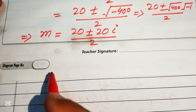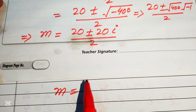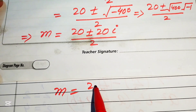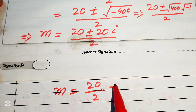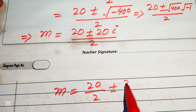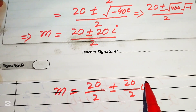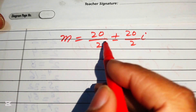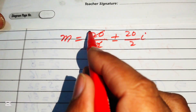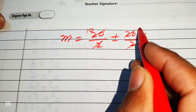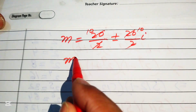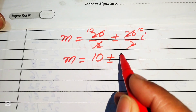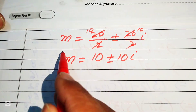Splitting the fraction: 20 over 2 plus or minus 20i over 2 gives us the two values of m: m equals 10 plus 10i and m equals 10 minus 10i. These are complex values.